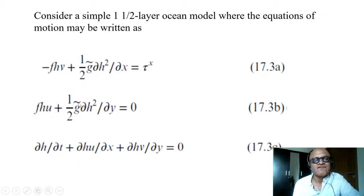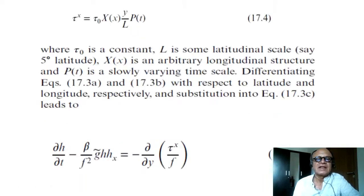And fhu plus one half g tilde d(x²)/dy equals zero. That's got the dimension of a pressure gradient. This is the continuity equation in the layer with currents u and v being affected in the transport within that layer.